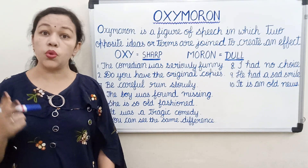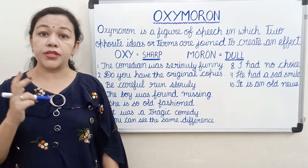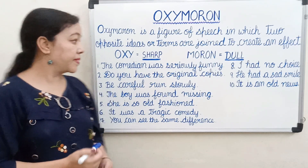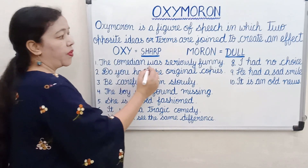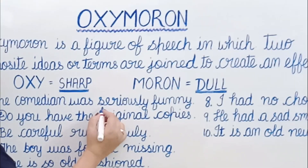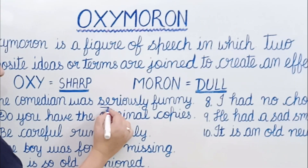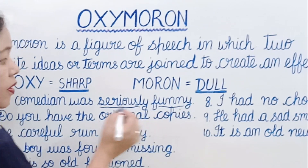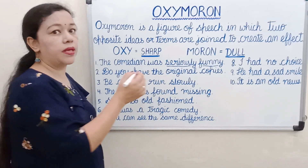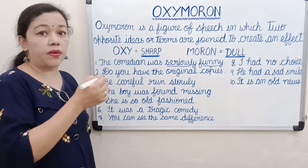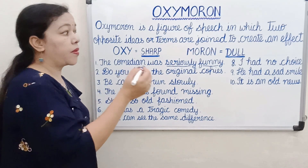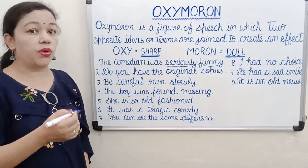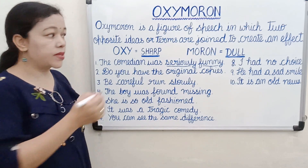The word itself has two opposite meanings together. Let's see some examples. The first example: 'The comedian was seriously funny.' In this sentence, seriously and funny are both opposite — seriously means something critically, and funny means something which is comic.